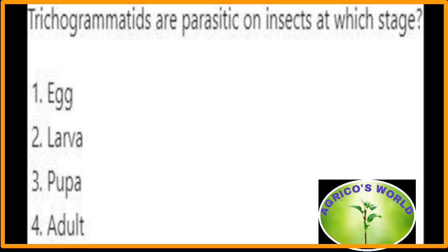Trichogrammatids are parasitic on insects at which stage? Trichogrammatids are parasitic on insects at the egg stage.